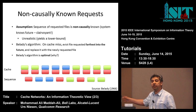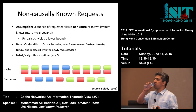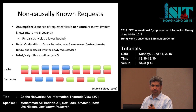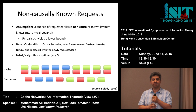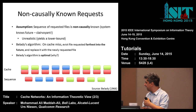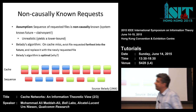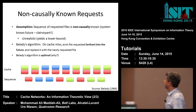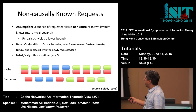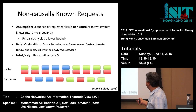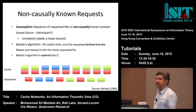So if you knew what the user will ask in the future, how do you run the cache? The optimum algorithm is called the Bélády algorithm, proposed in 1966. It says: whenever you have a cache miss, evict the file which is requested farthest in the future, and replace it with the new file.